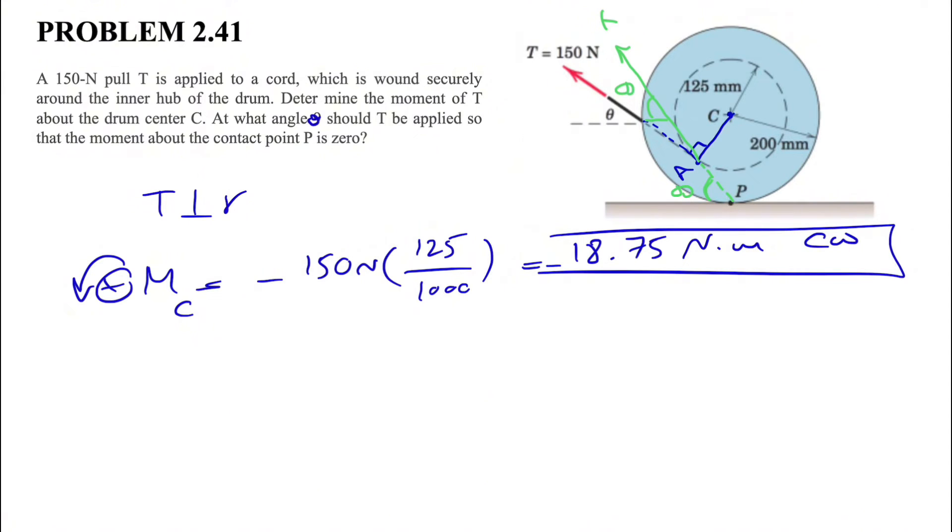This will be our condition. Let's call this angle our theta, which is what the question is asking. Based on the geometry we have this line here tangent to the outer circle, which means connecting these two together this will be perpendicular.